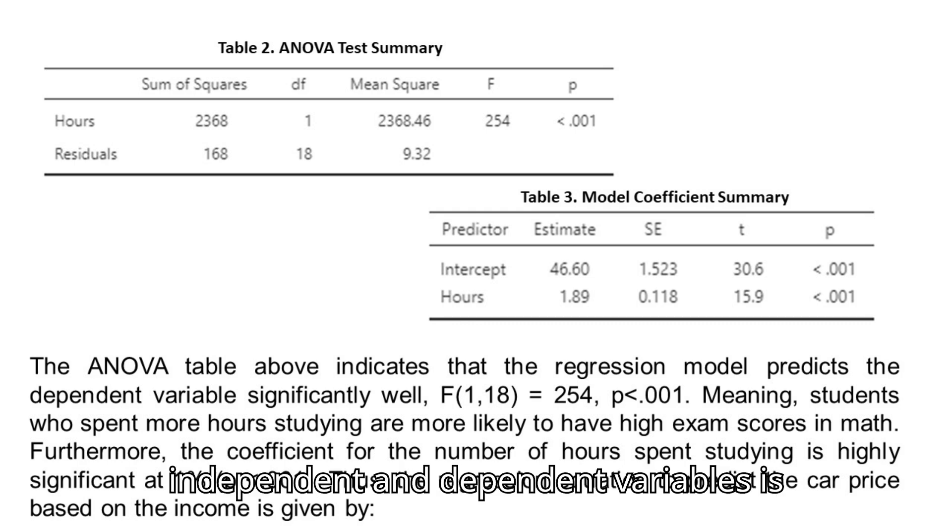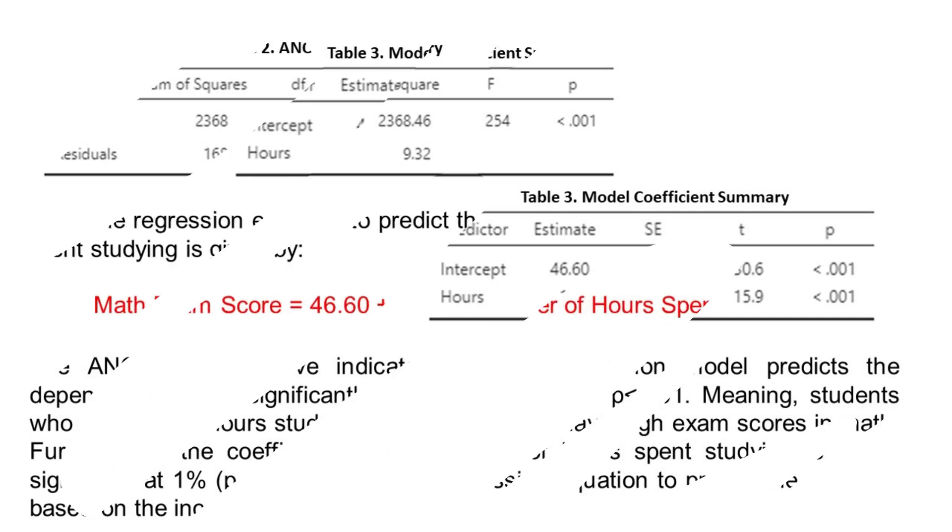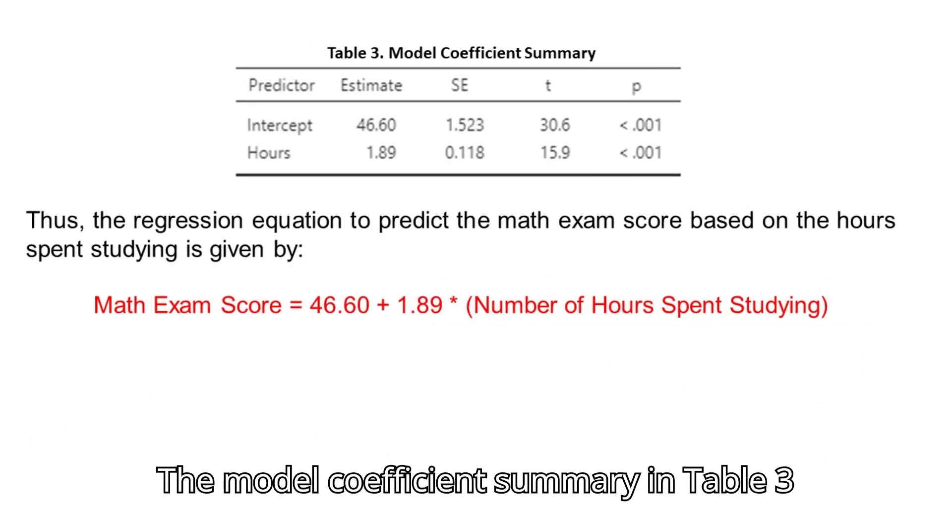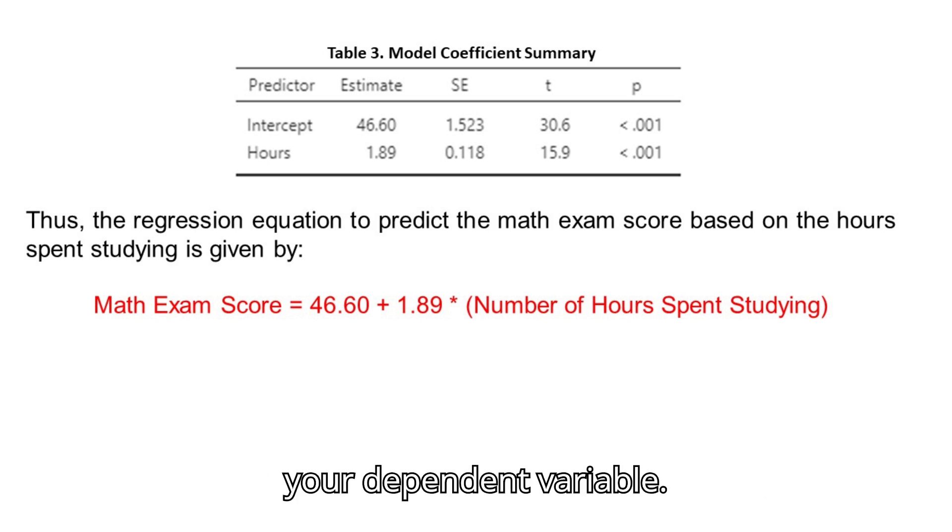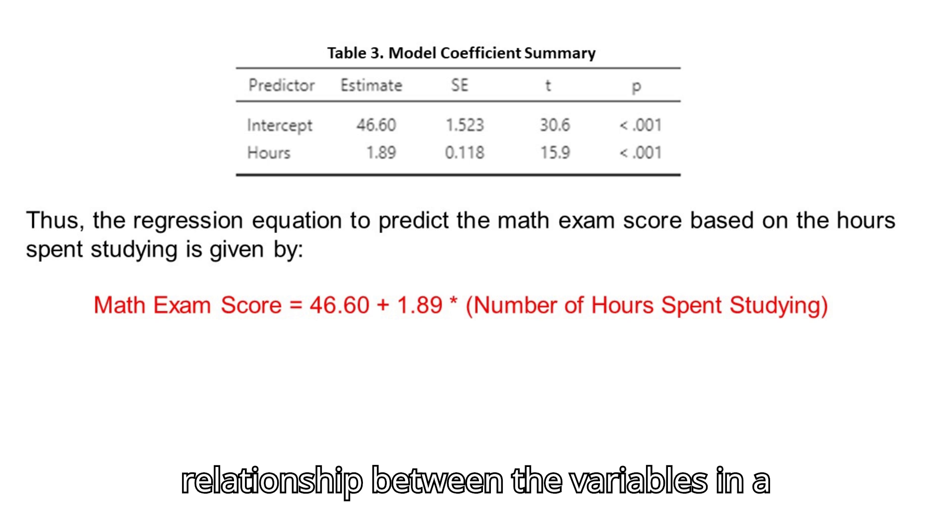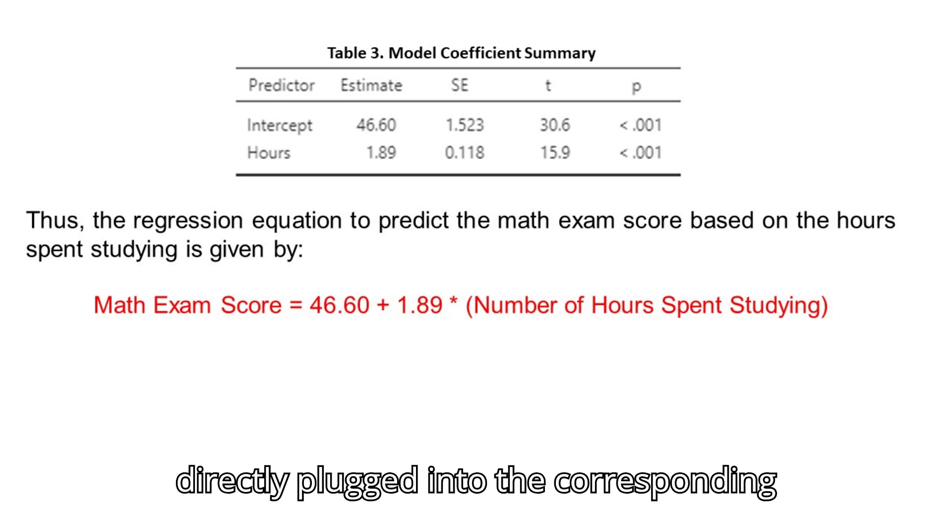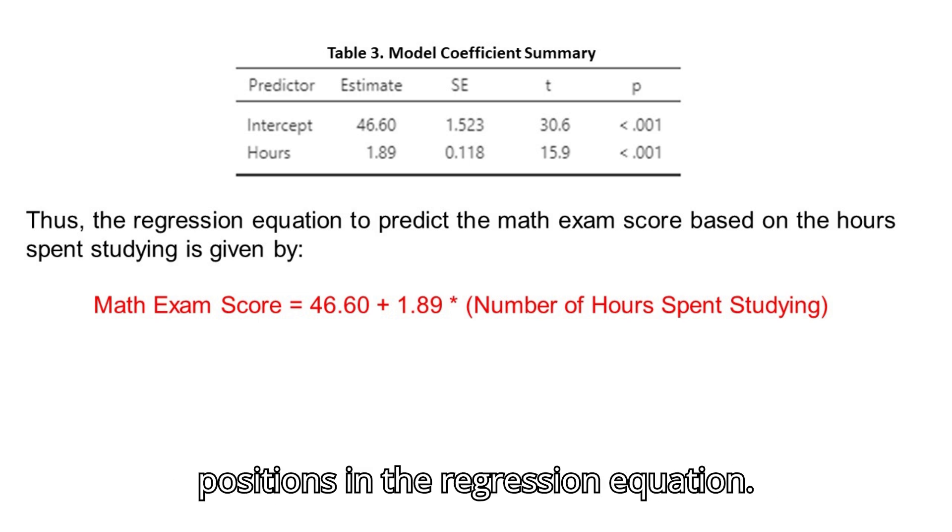The model coefficient summary in table 3 is used for interpreting the relationship between your independent variable and your dependent variable. It is also used to write the regression equation which expresses the overall relationship between the variables in a formula. The estimates or coefficients are directly plugged into the corresponding positions in the regression equation. The coefficient summary also helps interpret the values in the equation.